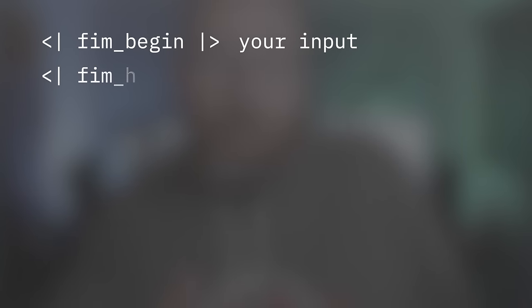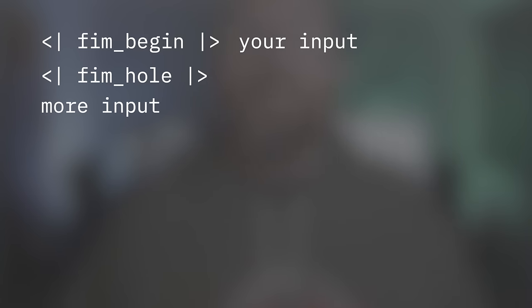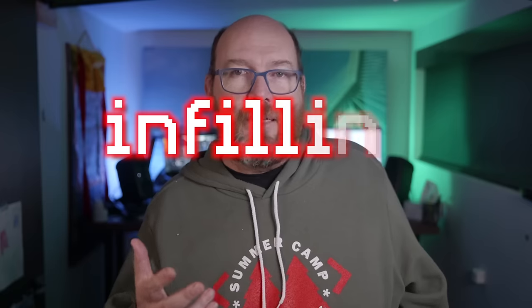For models that use the DeepSeek format, that looks like FIM_begin and then your input, FIM_hole which indicates where you want the answer to go, and then more input and finally FIM_end. Those angle brackets and pipe characters that you see are really important to the format, but hard to say, so I skipped them. Having that FIM_hole command is pretty cool, and filling in the middle is often referred to as infilling.